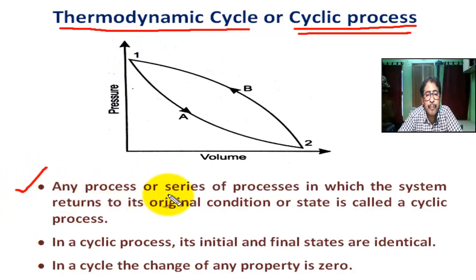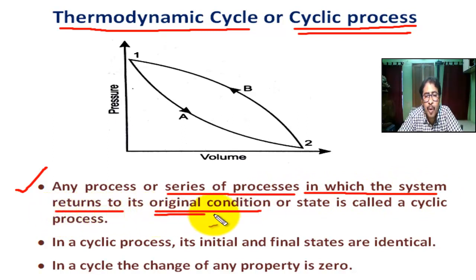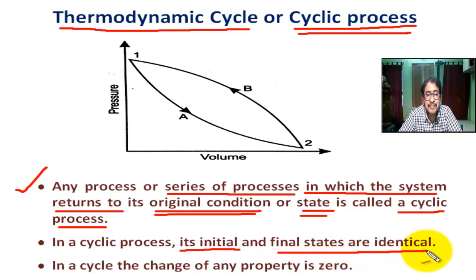Any process or series of processes in which the system returns to its original condition or state is called a cyclic process. In a cyclic process, its initial and final states are identical.